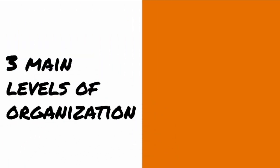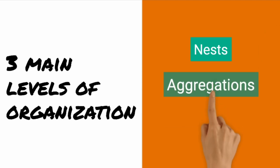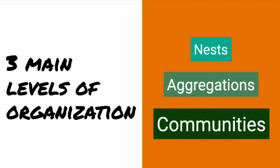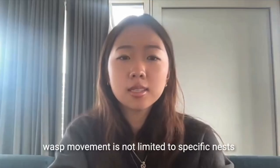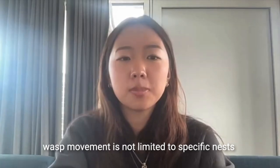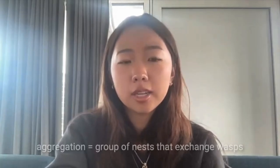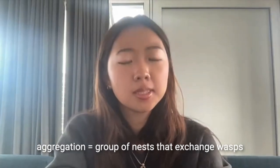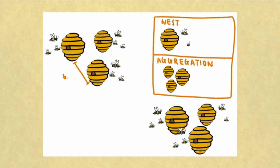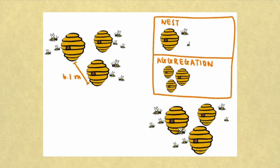Researchers found three main levels: nest, aggregation, and community. While workers tend to stay loyal to their own nests, the data show that wasps' movement between nests is common and not limited to specific nests. Aggregation refers to a group of nests that exchange wasps. The average distance between nests within an aggregation was about 6.1 meters, whereas the distance between different aggregations was about 425 meters — a big difference.